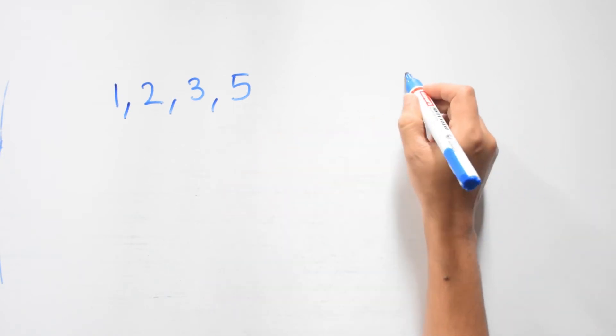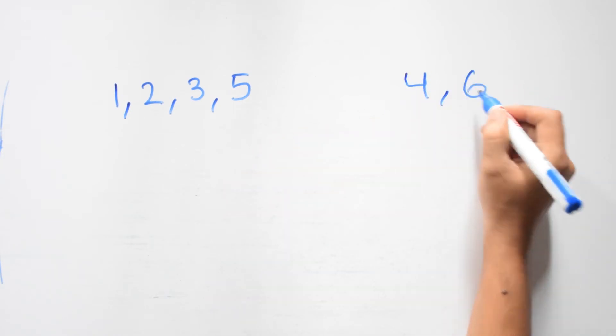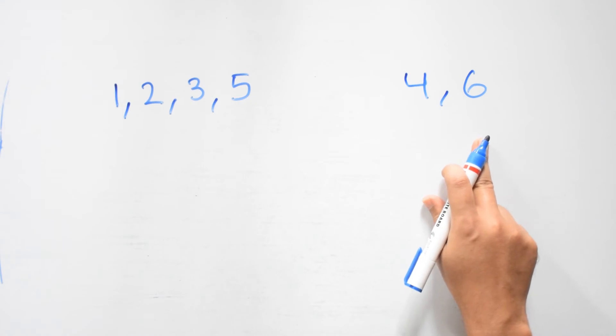Now we have two types of numbers. 1, 2, 3, and 5 can be put only in one group. 4 and 6 can be put in more than one group.